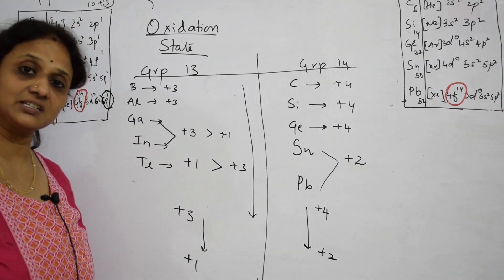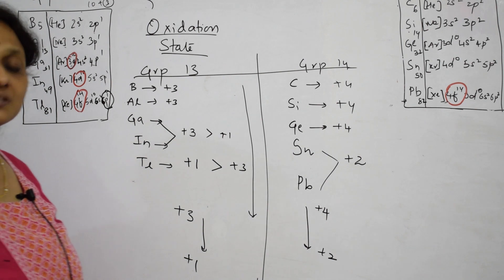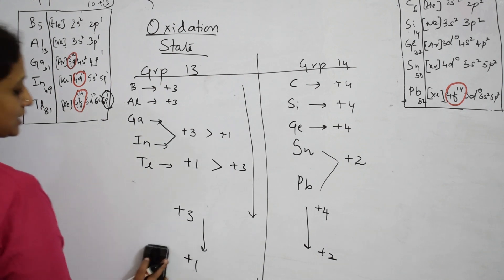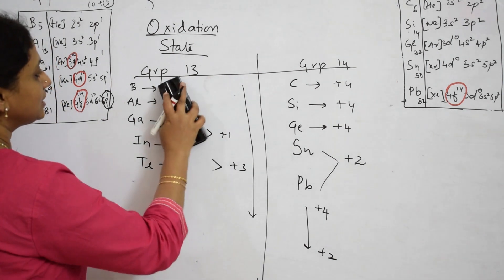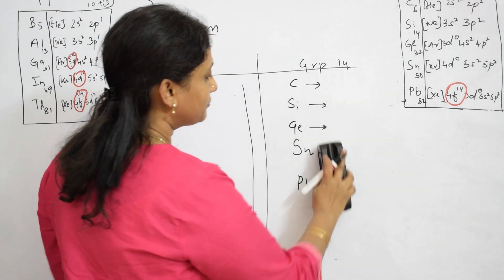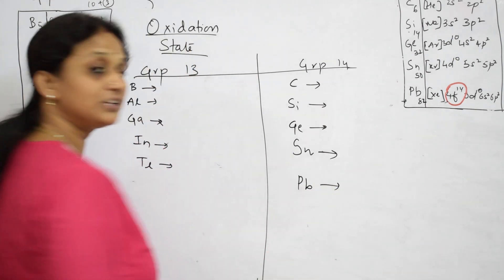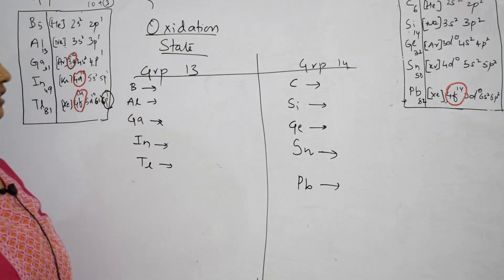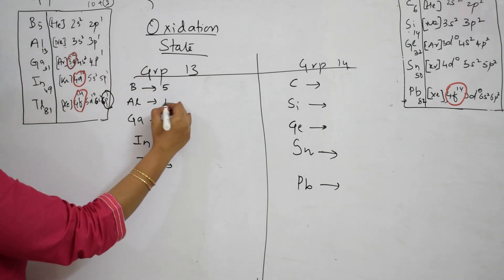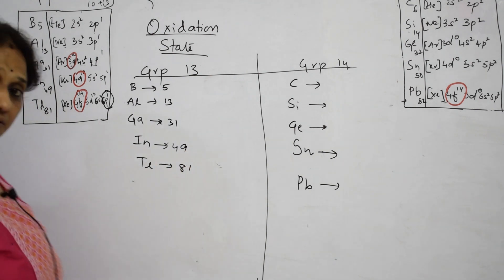What is the reason for this decrease in oxidation number as we go down the group? The main concept is the inert pair effect. Let us learn what the inert pair effect is. The first concept to remember is based on the electronic configuration of the element. Boron has atomic number 5, aluminium 13, gallium 31, indium 49, and thallium 81.